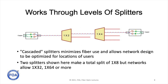You can cascade splitters to minimize the use of fiber and allow the network design to be optimized for the geographic locations of the users. In our demo we show two splitters — a 1x2 and a 1x4 — for a total split of 1x8.